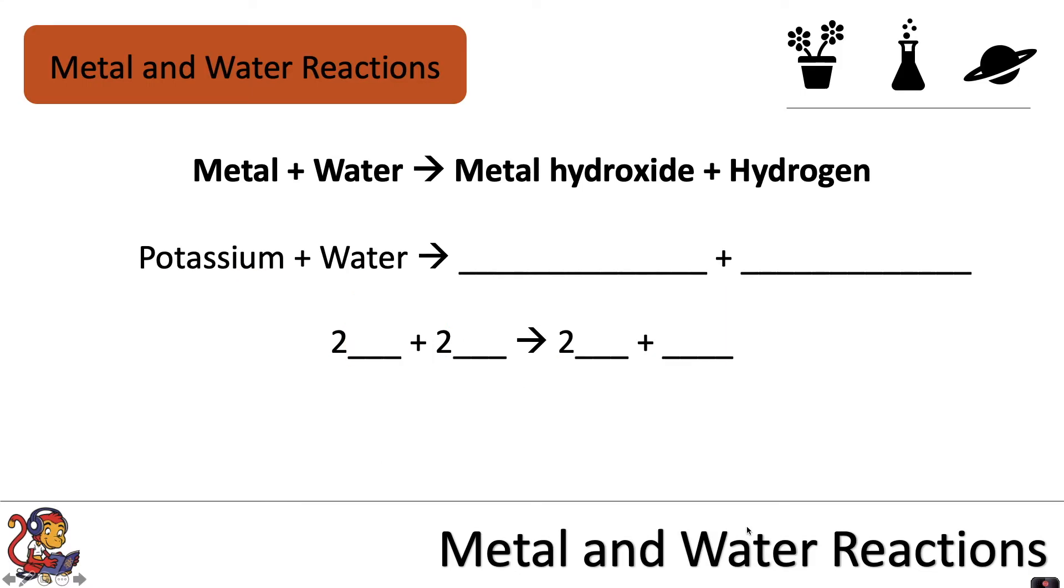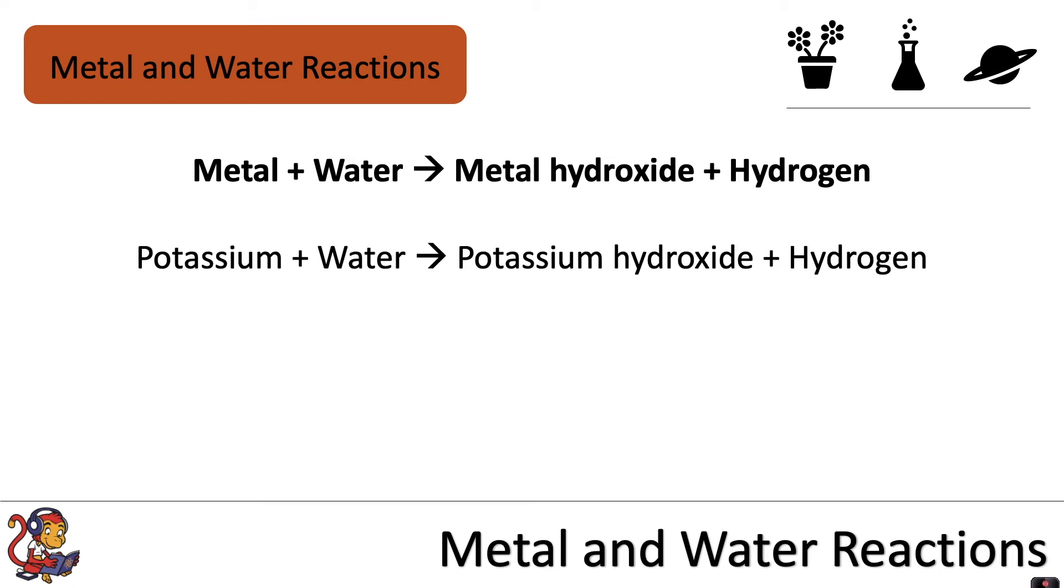So here's one for you to try and complete. For the symbol equation you can use the periodic table to help you. You might want to pause the video now whilst you have a go at this. Very well done if you wrote that potassium plus water would make potassium hydroxide plus hydrogen and the symbol equation would be 2K + 2H2O would make 2KOH + H2.